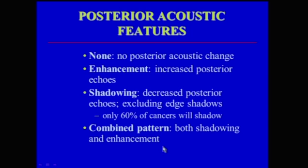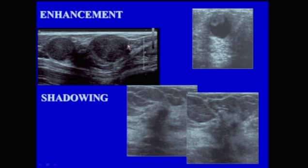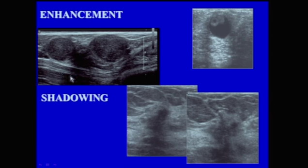Posterior acoustic features can include: no posterior acoustic change; enhancement with increased posterior echoes; shadowing with decreased posterior echoes — excluding edge shadows, seen in 60% of cancers; or a combined pattern with both shadowing and enhancement. Three different patients are shown: one with no significant posterior acoustic features; one with a cystic and solid component mass with prominent posterior acoustic enhancement; a third with an irregular mass showing posterior acoustic shadowing; and a fourth mass with apparent combined shadowing and enhancement.